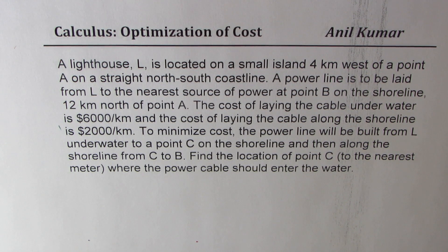A power line is to be laid from L to the nearest source of power at point B on the shoreline, 12 km north of point A. The cost of laying the cable underwater is $6,000 per km and the cost of laying the cable along the shoreline is $2,000 per km.